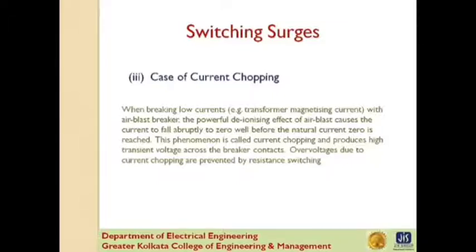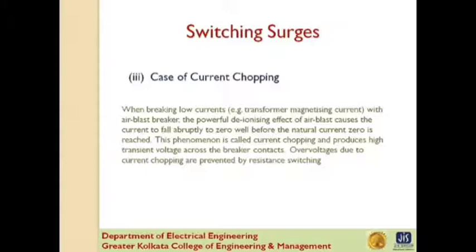Third case: current chopping results in the production of high voltage transients across the contacts of air blast circuit breakers. Unlike oil circuit breakers, air circuit breakers retain the same extinguishing power irrespective of the magnitude of current. When breaking low current, for example transformer magnetizing current, the powerful deionizing effect of air blast causes the current to fall abruptly to zero well before the natural current zero is reached. This phenomenon is called current chopping and produces high transient voltage over the breaker contacts. Overvoltages due to current chopping are prevented by resistance switching.